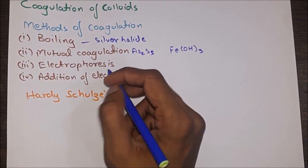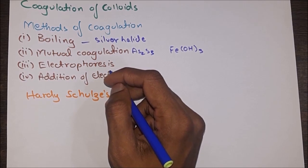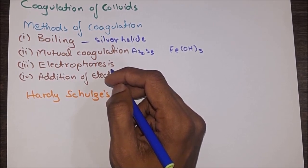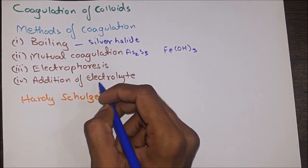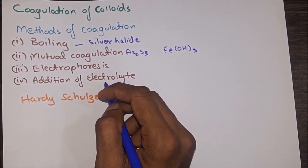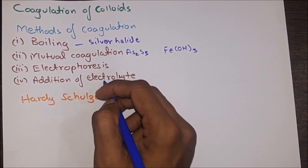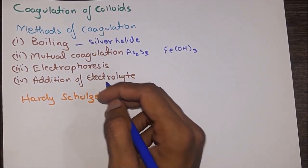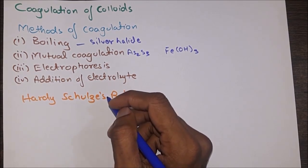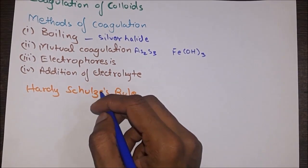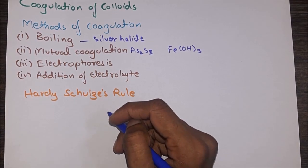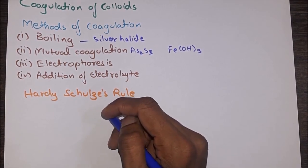Third, electrophoresis coagulation: under the influence of electrical current, all the colloidal particles migrate towards the oppositely charged electrode, where the charge on the colloid gets neutralized and the colloid gets coagulated. Fourth, addition of electrolyte: when a strong electrolyte is added to a colloidal solution, precipitation or coagulation of the colloid takes place, which is explained by the Hardy-Schulze rule. Hardy-Schulze rule states: (1) the ion of the electrolyte which has opposite charge to that of the colloidal particles is responsible for coagulation; (2) the coagulation power is directly proportional to the valency of the ion.